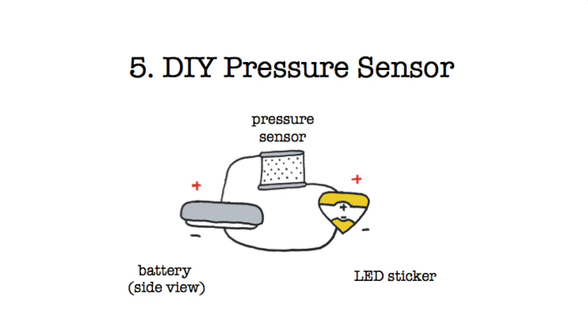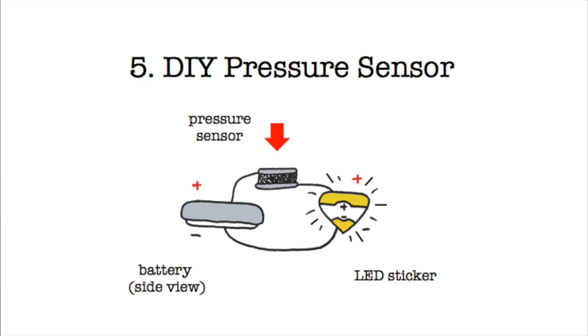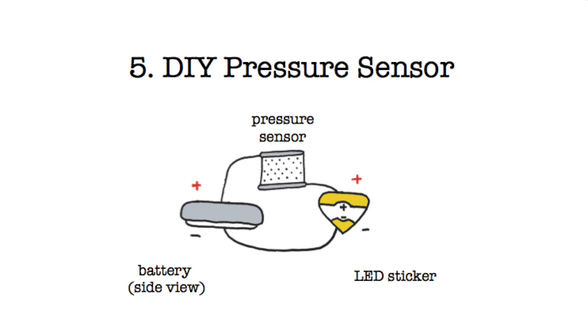A pressure sensor lets you control the brightness of your light. It's a bit like a switch, except instead of only turning your light fully on and fully off, it lets you gradually fade the light in and out.